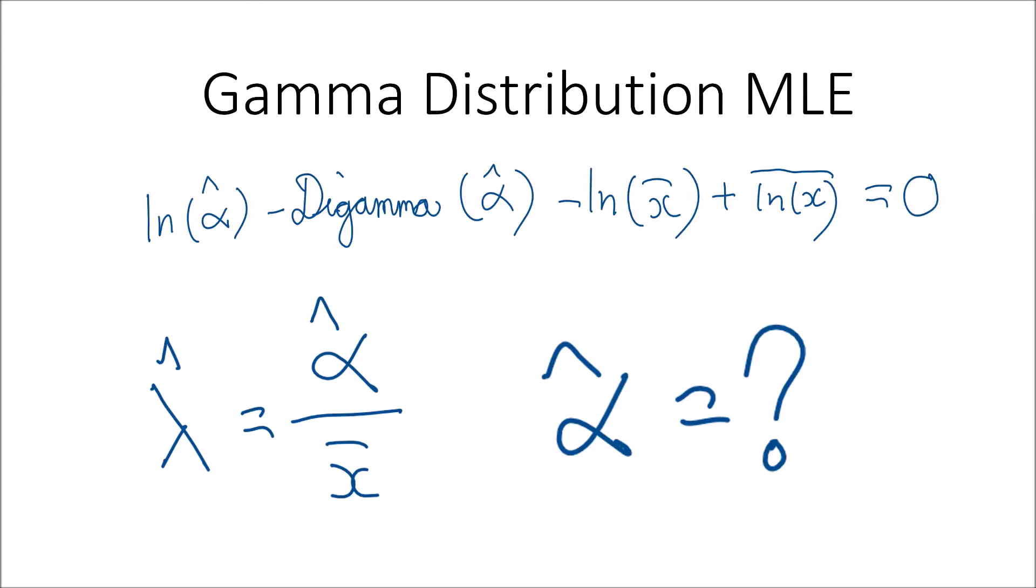Hey guys, Alexander here. In the previous video where we derived the maximum likelihood estimators and estimates of the gamma distribution, we arrived at the following equations. Firstly, we derived that lambda hat, which is the maximum likelihood estimate of the rate parameter, is equal to alpha hat over x-bar.